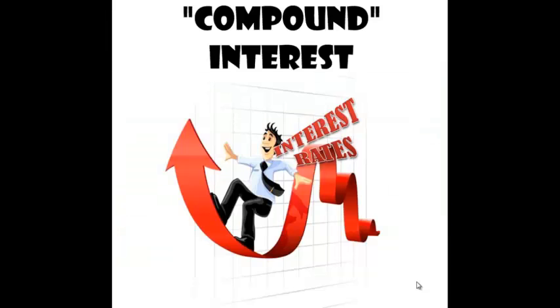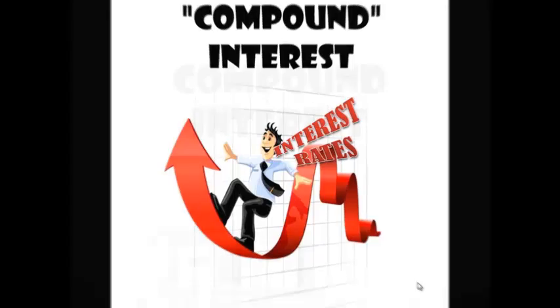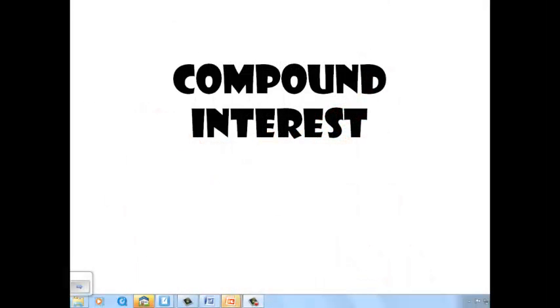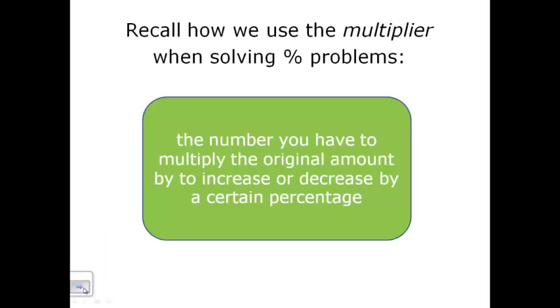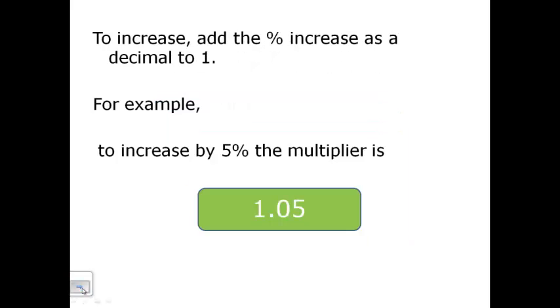We have to move on from simple interest to compound interest. Let's take a look at how compound interest works. First, let's do a little review of talking about how we use the multiplier in percent problems. Multiplier is what I call the shortcut. That's the number you have to multiply the original amount by to increase or decrease by a certain percentage.